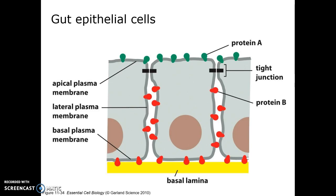The problem with that is that every time we move a sugar into the cell we're burning ATP, so there would be a loss of ATP for no gain. By keeping apical proteins apical and basolateral proteins basolateral, we can move sugar from the gut lumen into the bloodstream efficiently.